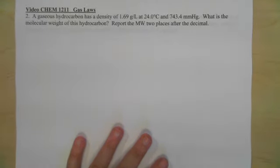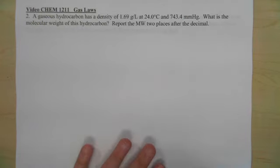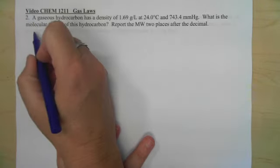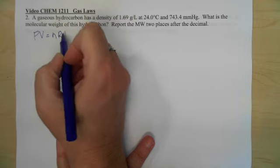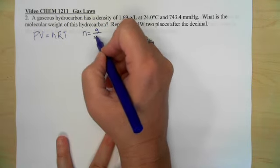Second gas law problem we're going to work is the one involving the density. So again, this is a variation on PV equals nRT with n we know is grams over molecular weight.